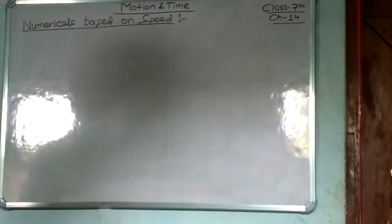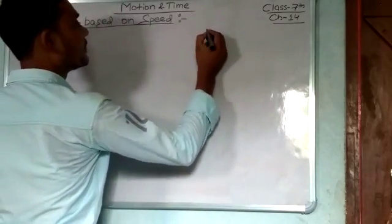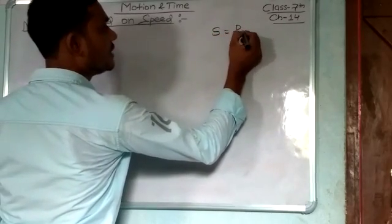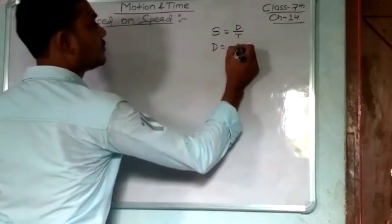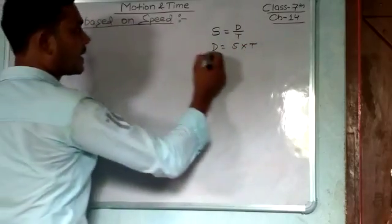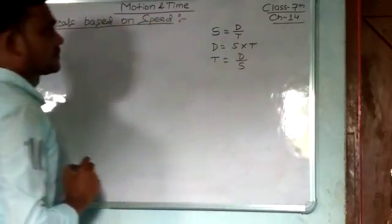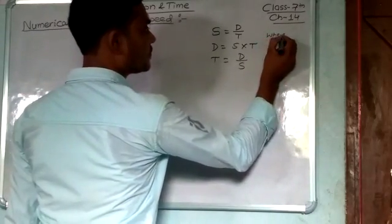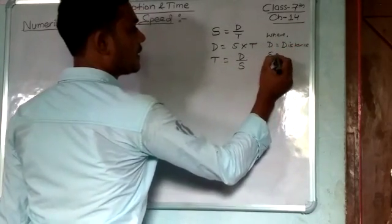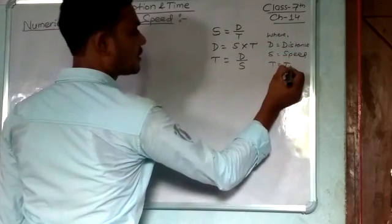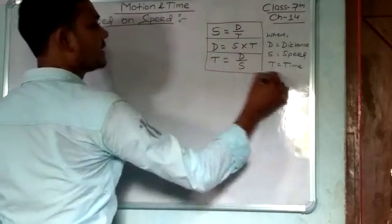The formula: speed equals distance upon time, so we can write s = d/t. We can also say d = s × t, and t = d/s, where d is distance, s is speed, and t is time. These are the three important formulas regarding speed, distance, and time.